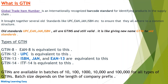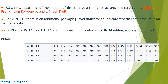All GTINs, regardless of the number of digits — whether 8, 12, 13, or 14 — follow the same structure: company code plus item reference plus check digit. In GTIN-14, one extra digit is added at the start, called the packaging level indicator, which is used to identify whether it is a case or carton GTIN versus an item GTIN.